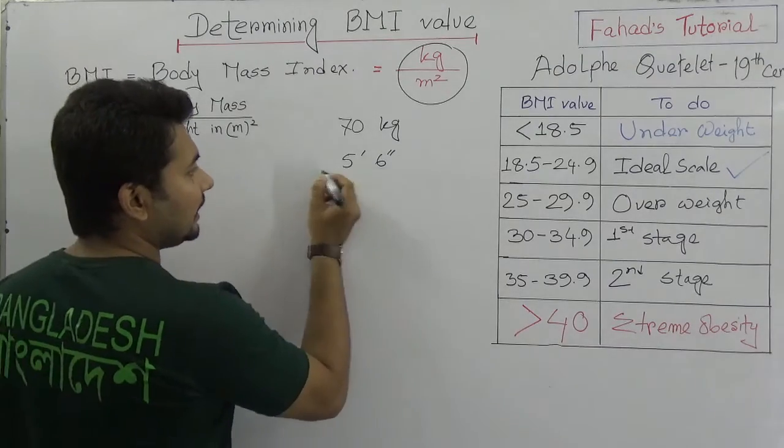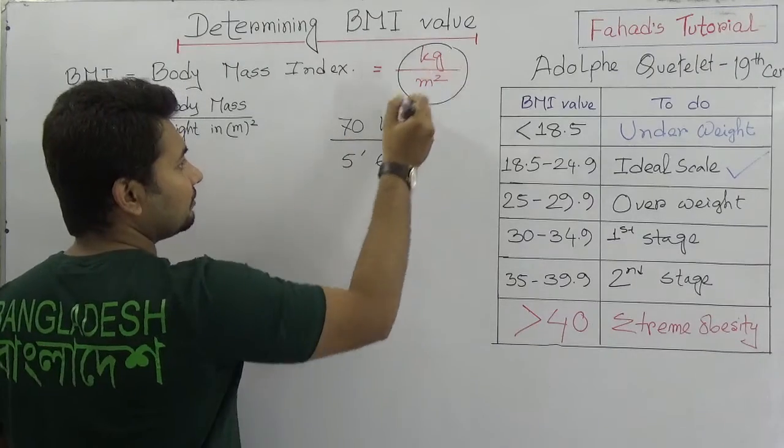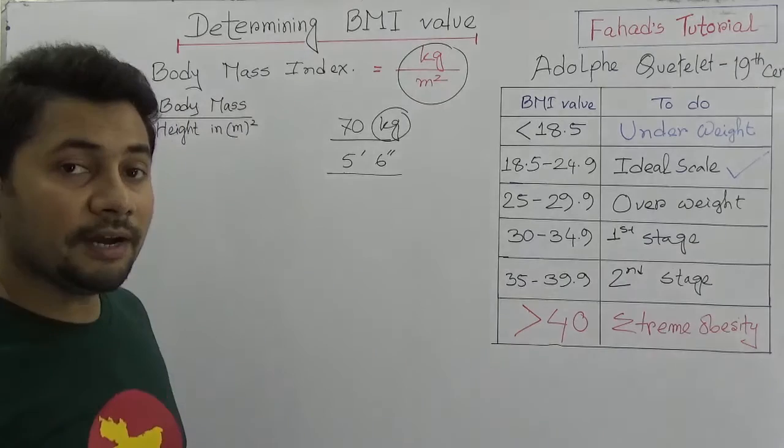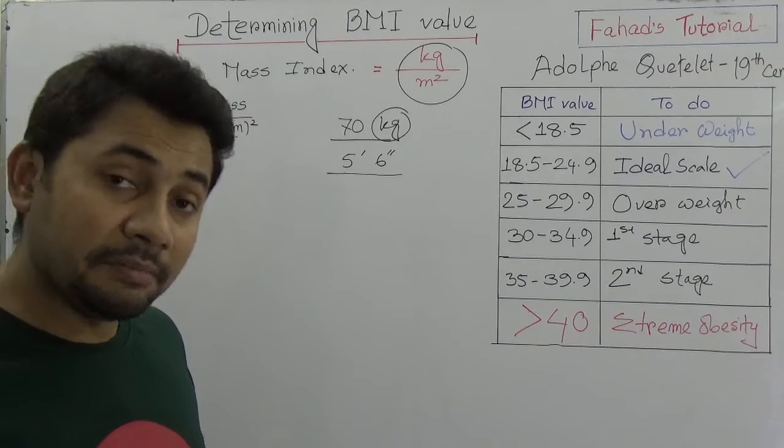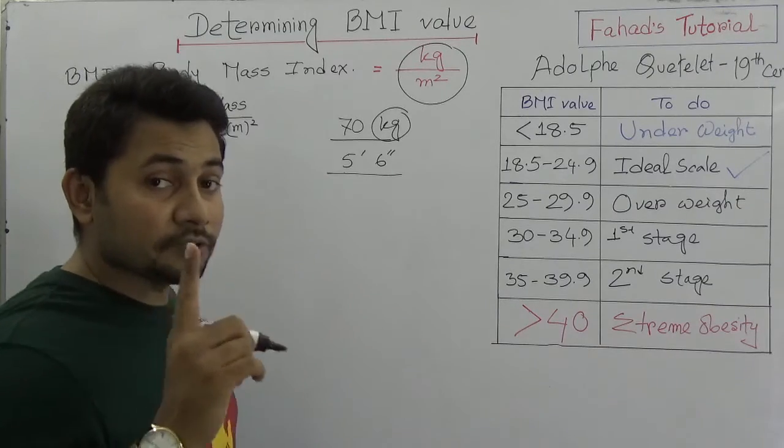If it's given like that, then we know that M, that means the kilogram is given, but we need to convert this 5 feet 6 inches into meter square. That's the problem.